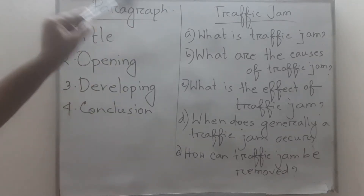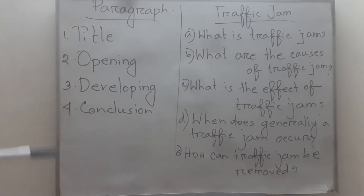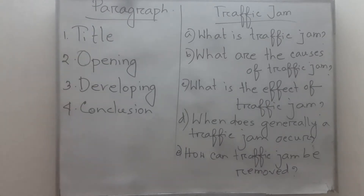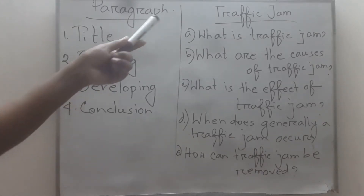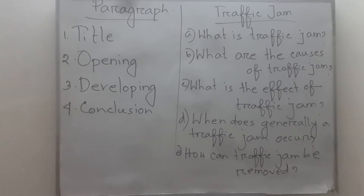There is an example paragraph given — the topic is about traffic jam. In the question paper, a topic is given along with some questions. You have to answer the questions and write the full paragraph. First, at the very beginning you have to write the title of the paragraph. The title is given in the question — here the title is 'Traffic Jam'. In the title, there is no full stop given; you must not give a full stop.